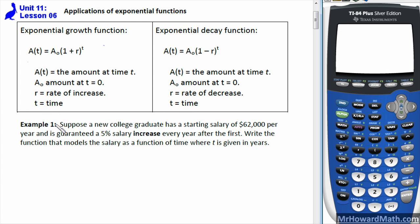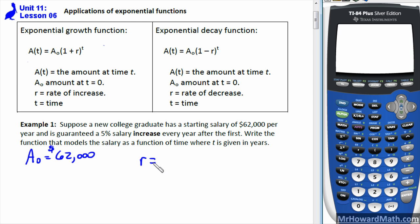Example one: suppose a new college graduate has a starting salary of sixty-two thousand per year. So a-sub-zero, our initial amount, is sixty-two thousand. There's a guaranteed five percent salary increase every year after the first, so the rate is five percent, meaning we use 0.05 in decimal form. Make sure you write percentages in decimal form — if you put a five for r it will give you the wrong answer.